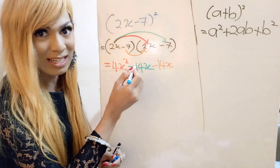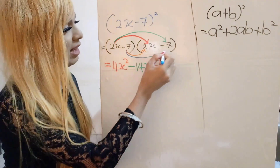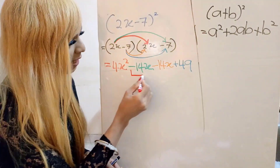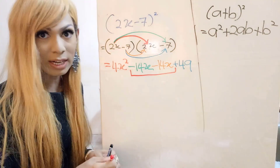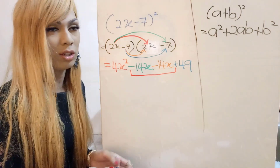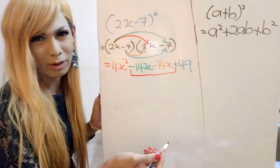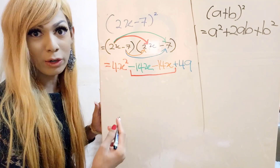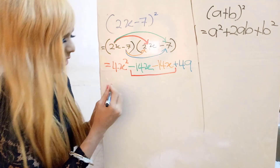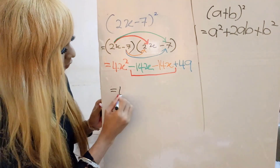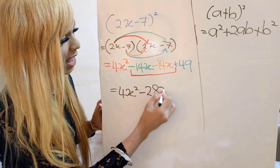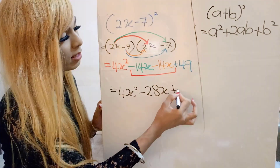Then negative 7 multiplied by 2x gives another negative 14x. And negative 7 multiplied by negative 7 — negative times negative gives positive — so we get positive 49. Combining the like terms: negative 14x minus another 14x gives negative 28x. So we have 4x squared minus 28x plus 49.